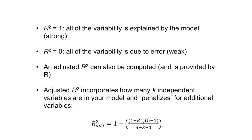The adjusted R squared incorporates how many different independent variables, we'll call them K, are in your model, and it penalizes you for additional variables.